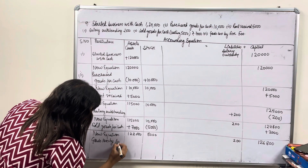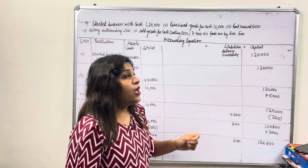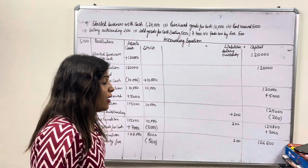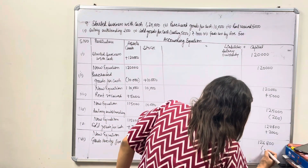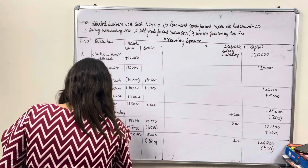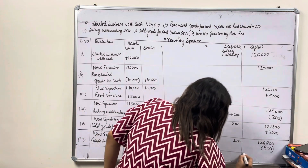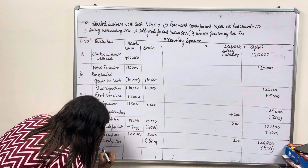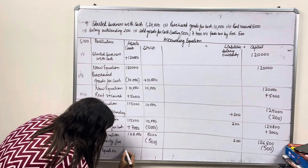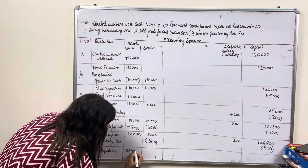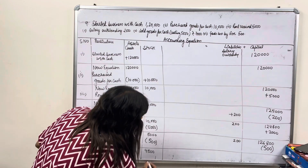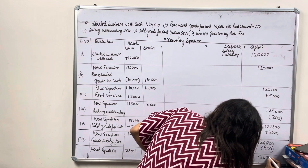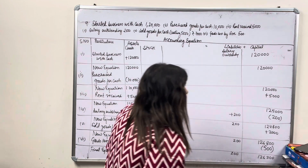Sixth transaction: goods lost by fire. Since we did not sell the goods, it is treated as goods lost by fire. Because it is a loss, capital will be reduced — capital minus. Final equation: cash 1,22,000, stock 4,500, liabilities 200, capital 1,26,300.